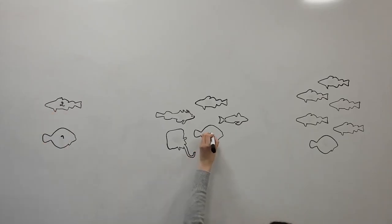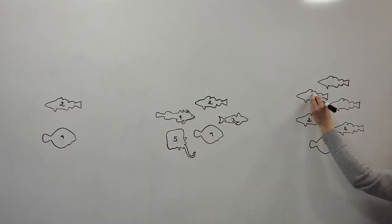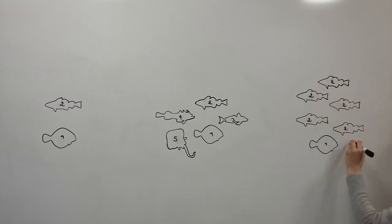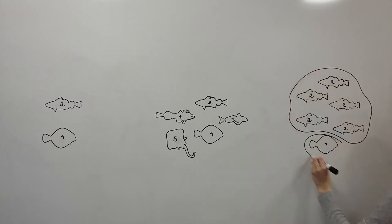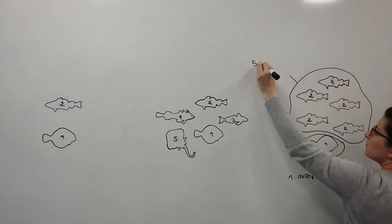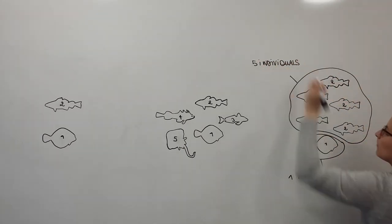To find out, I first calculate biodiversity in fish communities, which can be measured as the number of species or the number of individuals per species.